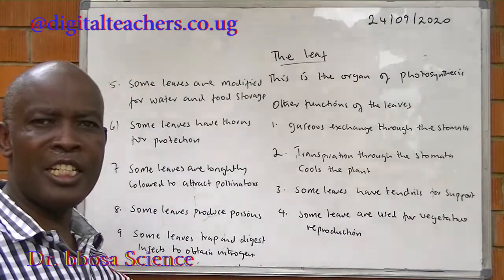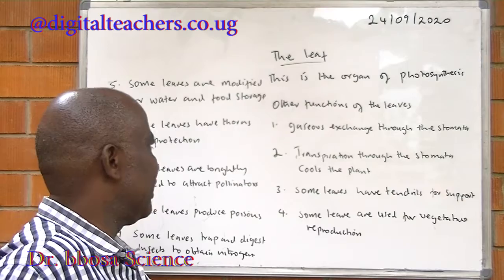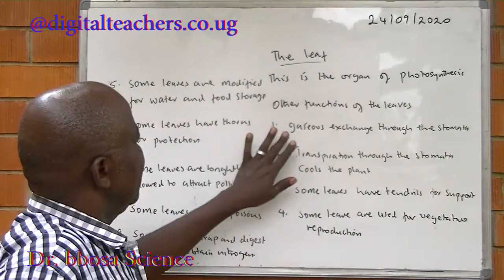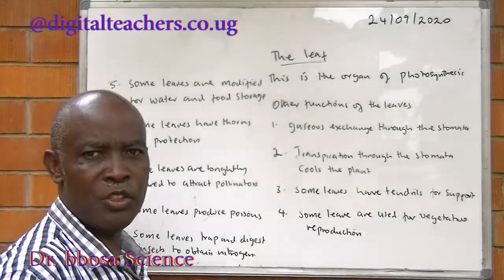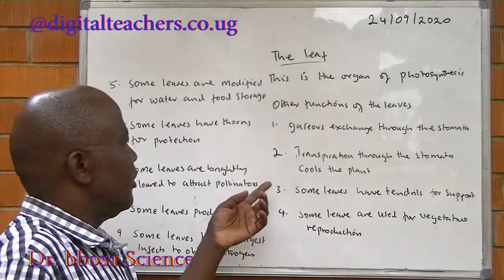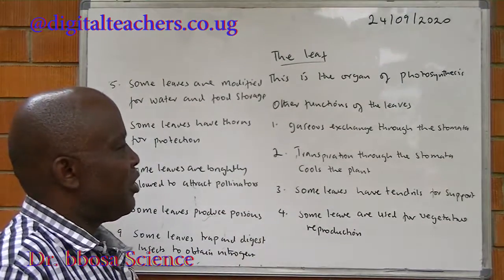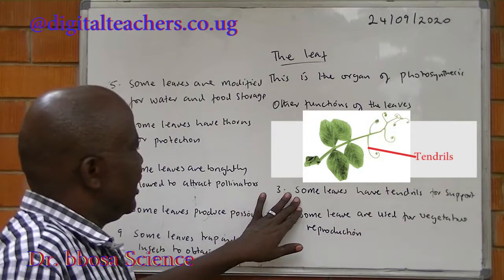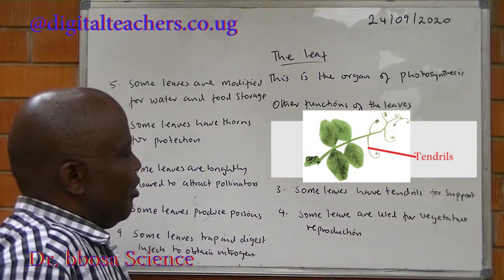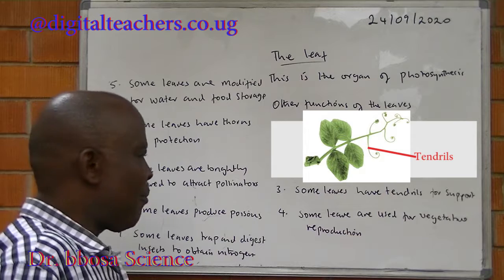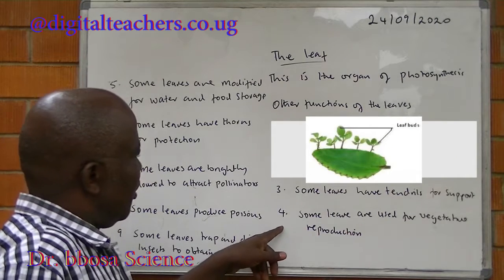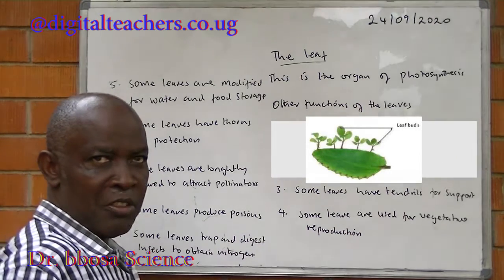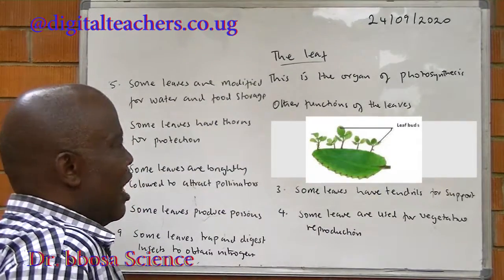The leaf is the main organ of photosynthesis. Other functions of leaves include: gaseous exchange through the stomata; transpiration through the stomata, which cools the plant; some leaves have tendrils for support, for example the pea plant.